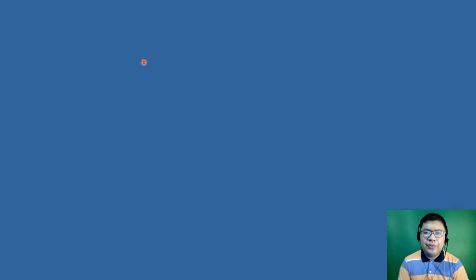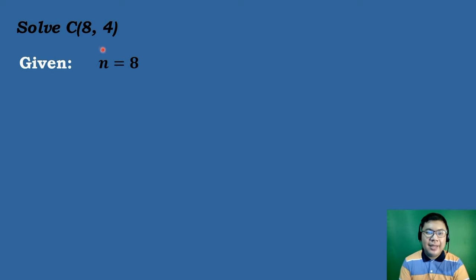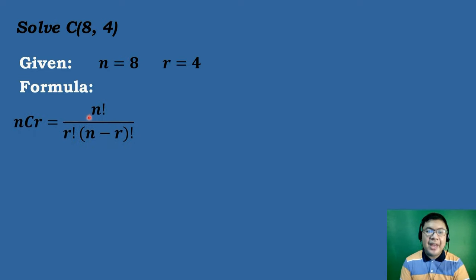Let's have our first example: solve the combination of 8 objects taken 4 at a time. The first step is to identify the given. The value of n will be equal to 8, and the value of r will be equal to 4. After that, we will use the formula of combination: nCr equals n factorial over r factorial times the quantity n minus r factorial. Then we substitute the given.